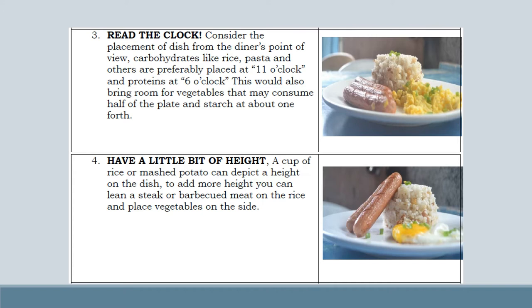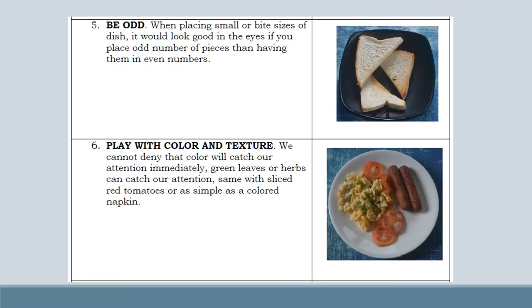This would also bring room for vegetables that may consume half of the plate and starch at about one-fourth. Number 4: Have a little bit of height. A cup of rice or mashed potato can add height on the dish. To add more height, you can lean a steak or barbecue on the rice and place vegetables on the side.